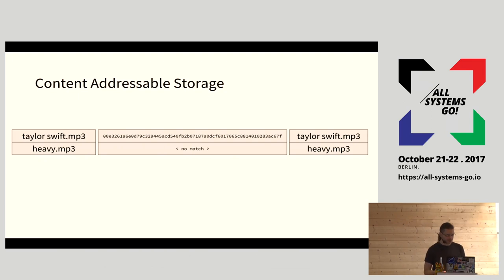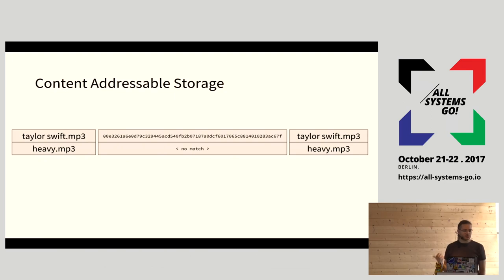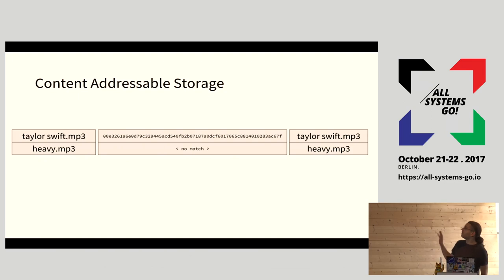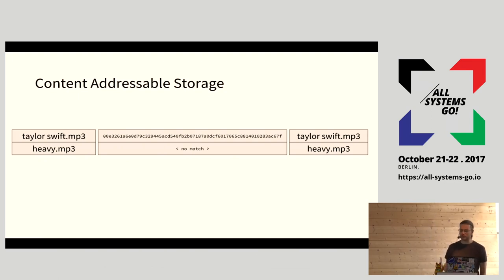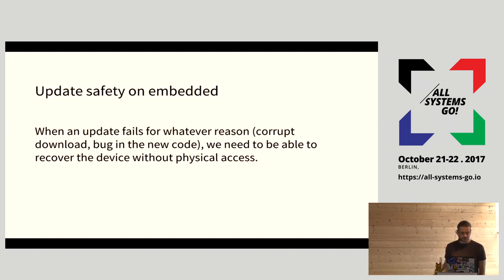This is very efficient when you have multiple operating system images that contain mostly the same data - which is very common because most Linux OS images are similar with minor differences, and you only want to store the difference. However, this doesn't work so well in IoT where we don't store filesystem trees, and we don't even store filenames because we don't have space for that.